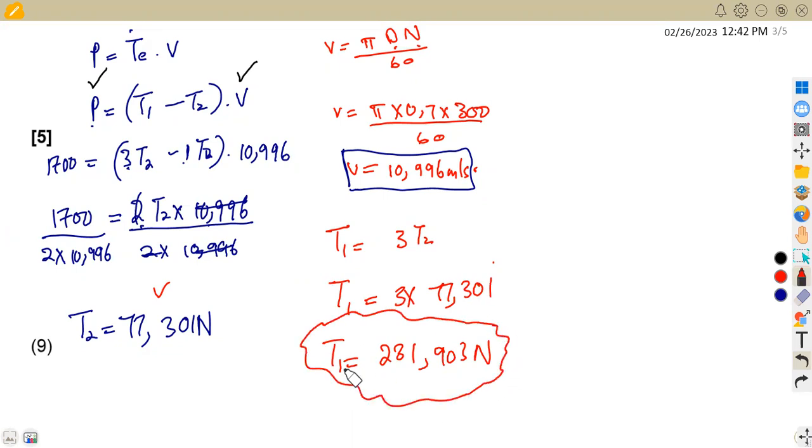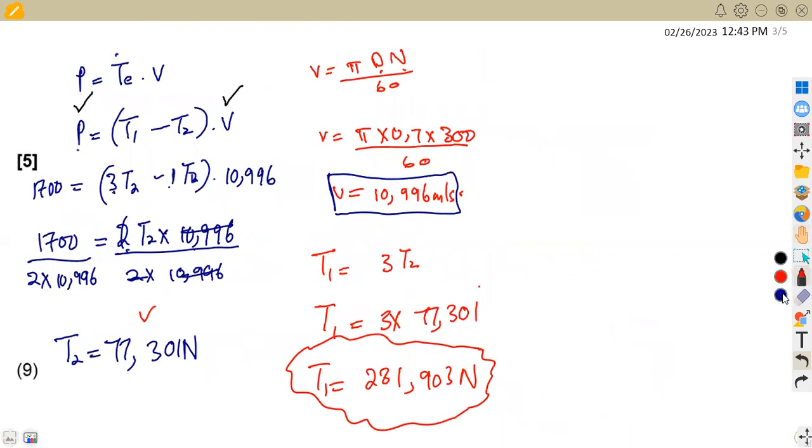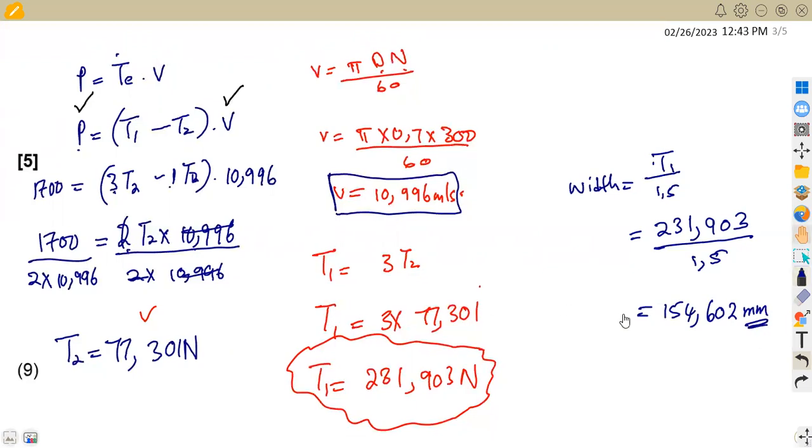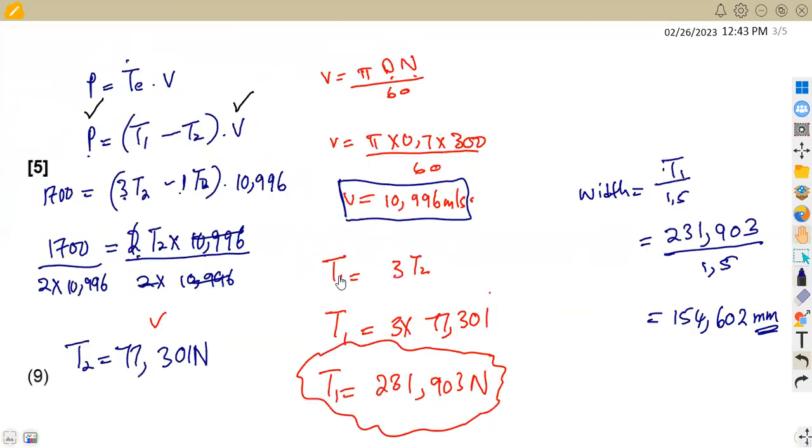By finding T1, it's now easier for us to find the width, because we say the width is T1 over 1.5 Newton from the given ratio. So that means our width in this case is equivalent to T1 over 1.5 Newton, which is 231.903 over 1.5. So that was how easy the question was. If you divide properly, you are going to obtain a width of 154.602. Remember, here we're dealing with 1.5 Newton per millimeter, so our width is going to be in millimeters.